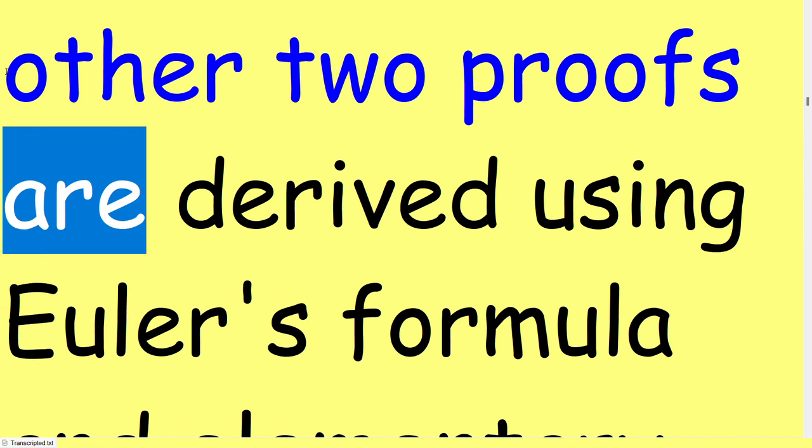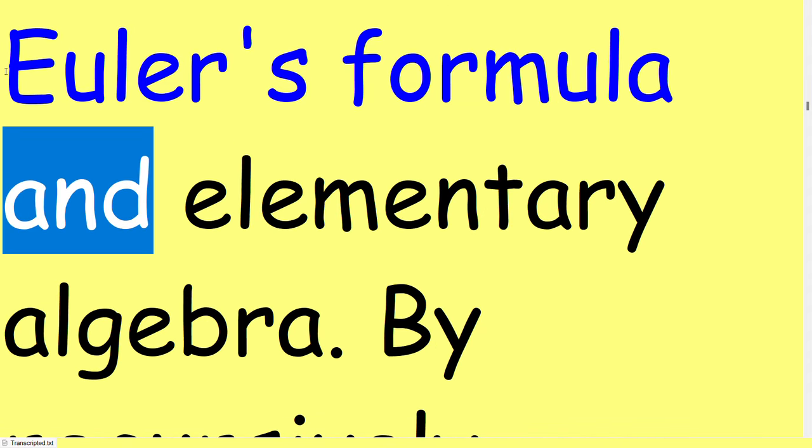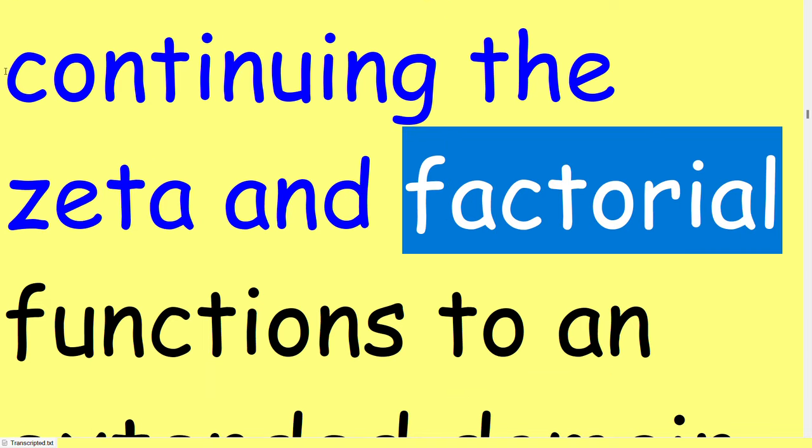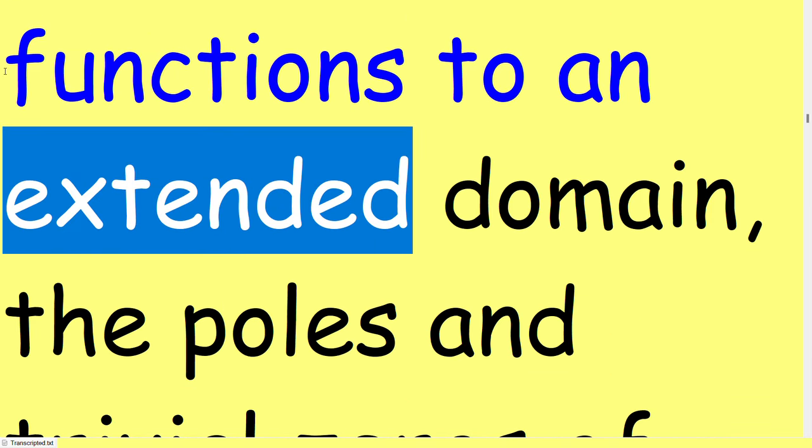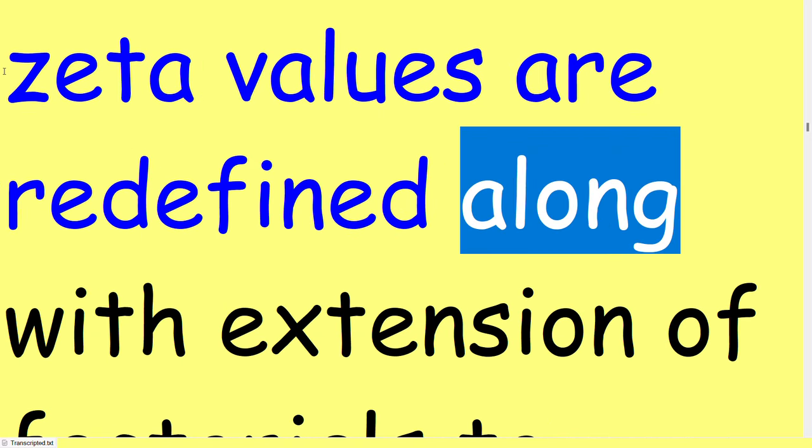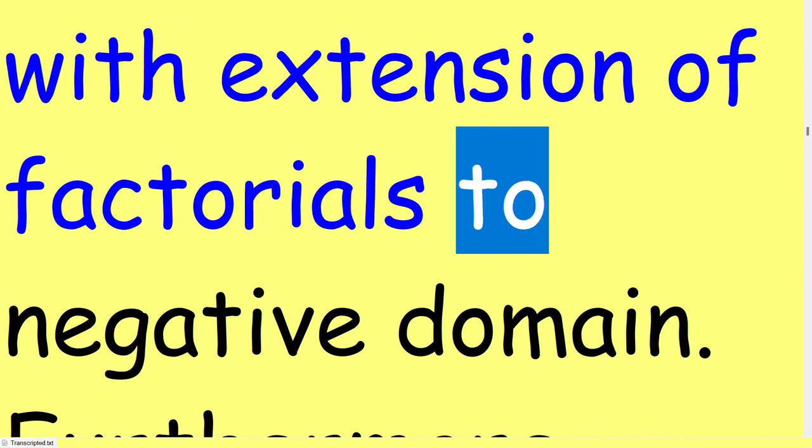The other two proofs are derived using Euler's formula and elementary algebra. By recursively continuing the zeta and factorial functions to an extended domain, the poles and trivial zeros of zeta values are redefined along with extension of factorials to negative domain.